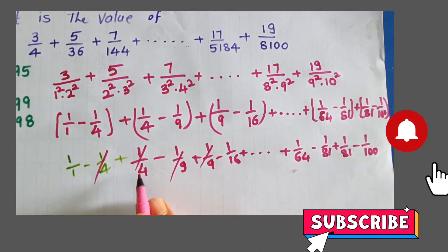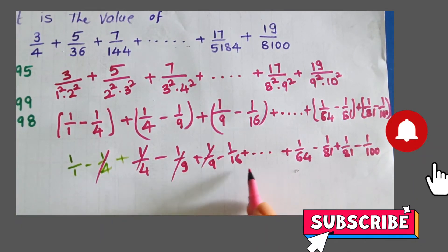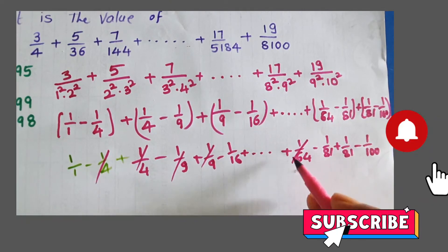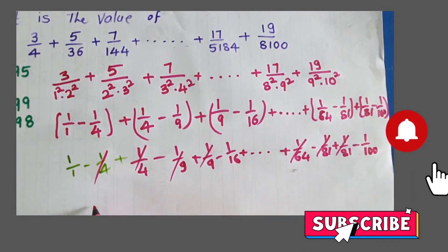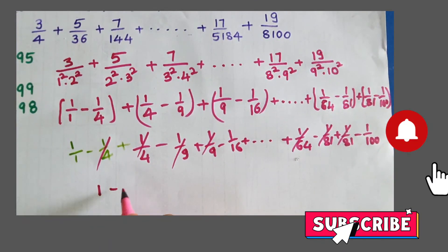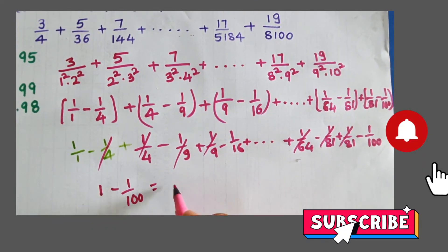Notice minus 1 by 4 plus 1 by 4 cancel, minus 1 by 9 plus 1 by 9 cancel. The first and second terms in each pair cancel. Before the end, minus 81 plus 81 cancel out.